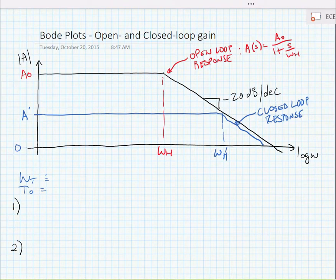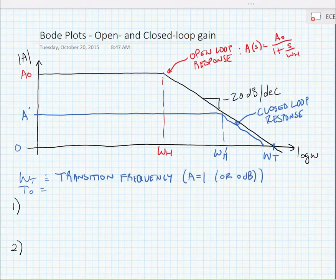Now, the point where the op-amp gain crosses over 0 dBs, or unity, we call the transition frequency, or omega t. The transition frequency, again, is where the gain goes to unity, or 0 dB.